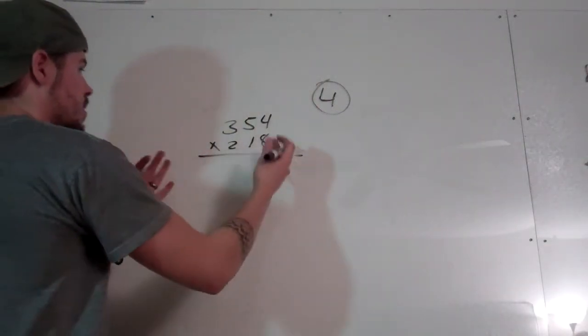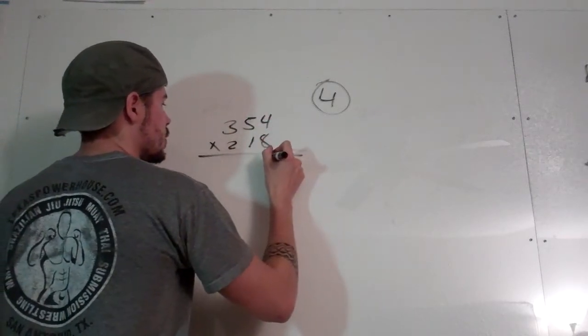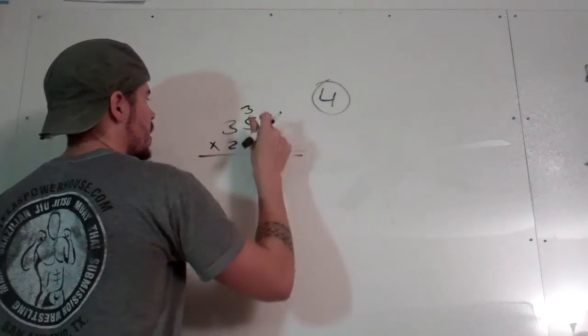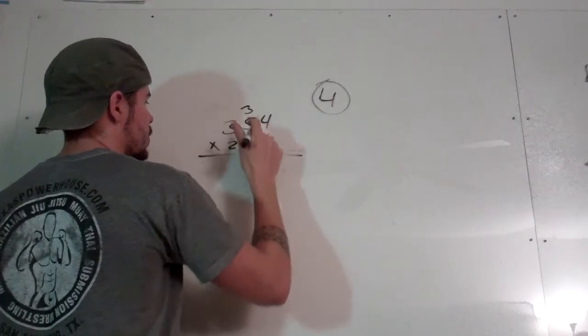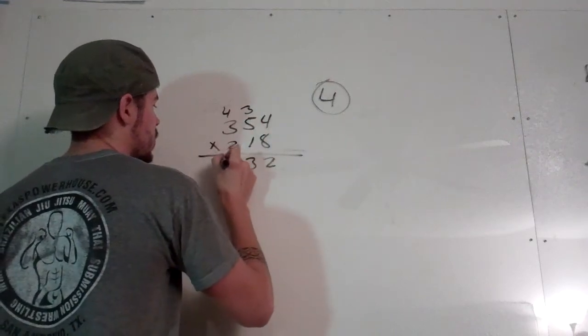So now let's go ahead and get through with the multiplication. 8 times 4 is 32, so 2, carry over the 3. 8 times 5 is 40, plus 3, that's 43. 8 times 3 is 24, plus 4, that's 28.